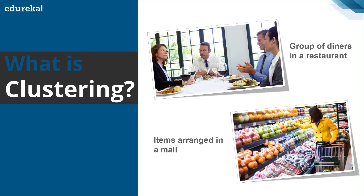Suppose there are two tables in a restaurant, Table T1 and Table T2. The group of people sitting at T1 are related to each other — they may be family members, colleagues, or similar. Even the people sitting at T2 are connected with each other, but only among themselves. When you compare the people at T1 to those at T2, they are entirely different — not at all related. This is how clustering works: the data points within one cluster are entirely different from the data points of another cluster, while all points within the same cluster are similar or related to each other.